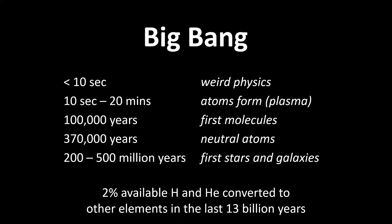The Big Bang's first 10 seconds is really weird physics — nothing really makes a lot of sense, certainly not from a chemist's point of view. But between 10 seconds and 20 minutes, atoms form. Neutrons, protons, and electrons form and start to form atoms, though at this point they're still ionized — nuclei and electrons still separated. In that period you've got hydrogen, helium, and a little tiny bit of lithium formed. And that's it. After 20 minutes, the universe is already too cool for direct nucleosynthesis — too cool for any new elements to form.